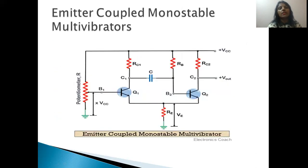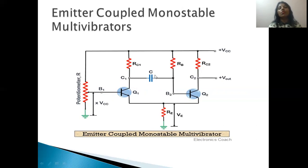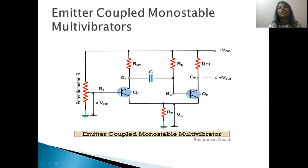Going back to the diagram: when Q1 is in saturation, capacitor C starts to charge. It charges through resistance R_B and transistor Q1. When the voltage at this point becomes sufficiently positive to meet the minimum base requirement for transistor Q2, if the voltage is charged enough, Q2's conduction starts. When Q2's conduction starts, the collector current increases.